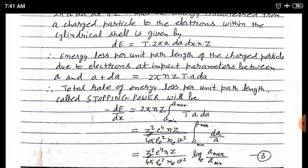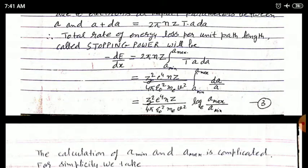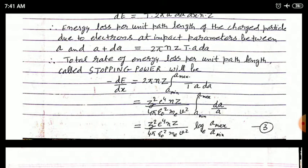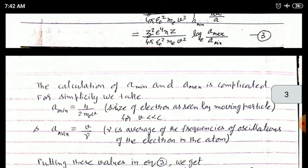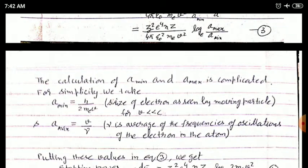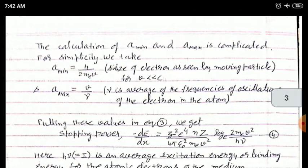Solving this integral gives the stopping power as: minus dE/dx equals z squared e to the power 4 times n times Z, divided by 4 pi epsilon_0 squared m_e v squared, multiplied by log_e(a_max over a_min). This is equation 3. For a_min we take h over (2 m_e v), and for a_max we take v over nu, where nu is the average frequency of oscillation of electrons in the atom.